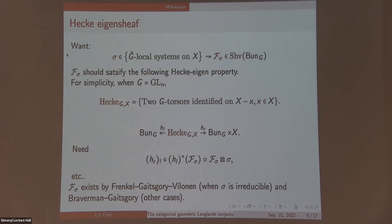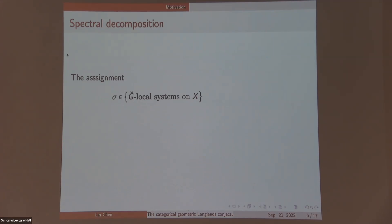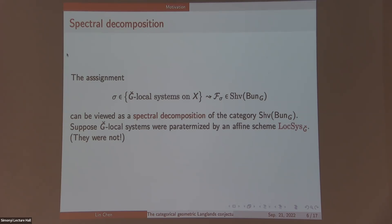But now let's look at the nature of this correspondence, like what's the assignment from sigma to F-sigma. I would like to view it as a spectral decomposition of the category of sheaves on Bun_G. What do I mean? I mean the following. Suppose G-check local systems were parameterized by a scheme Loc_SG-check, but in fact it's not. But if this was the case, then the previous correspondence suggests that this commutative ring of functions Loc_SG-check should act on this sheaf of Bun_G. And you should view this category as something live over spec of this O.